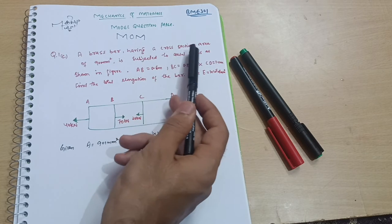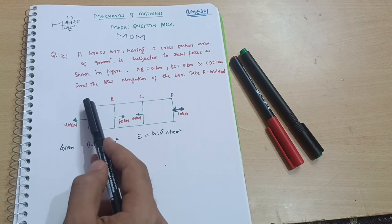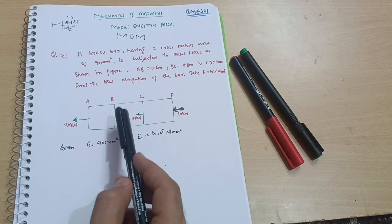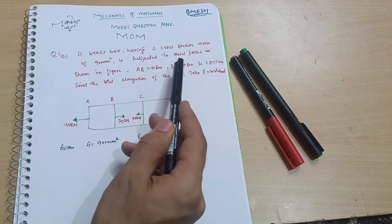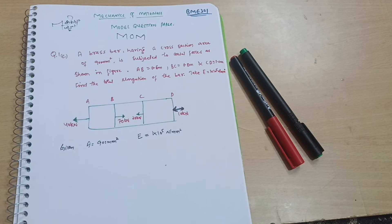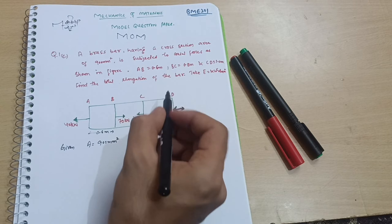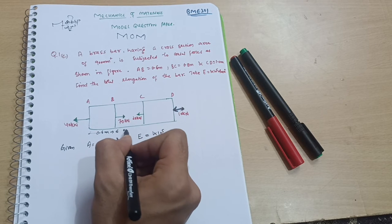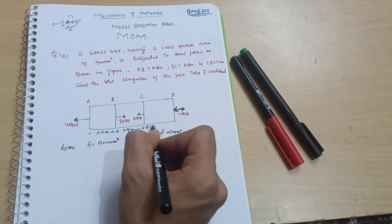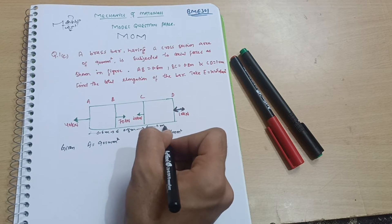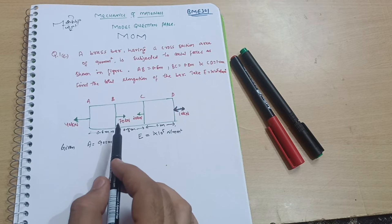A brass bar having a cross-sectional area of 900 mm² is subjected to axial forces as shown in the figure. The length AB is equal to 0.6 m, BC is equal to 0.8 m, and CD is equal to 1 m. Find the total elongation of the bar.